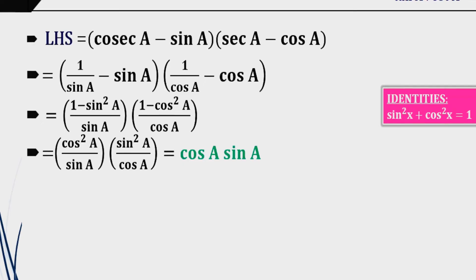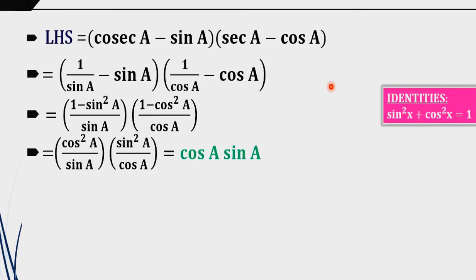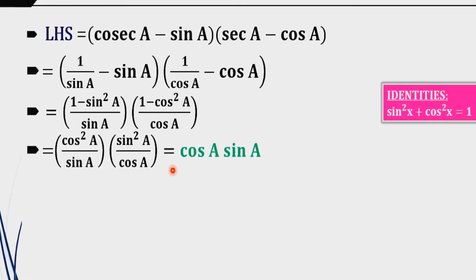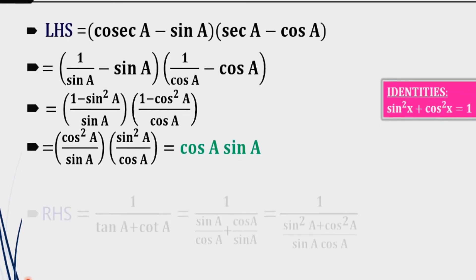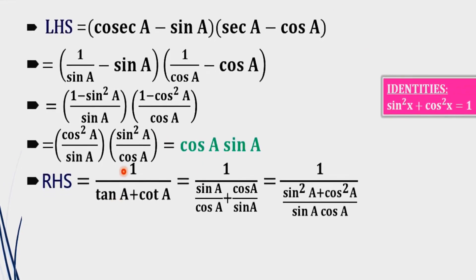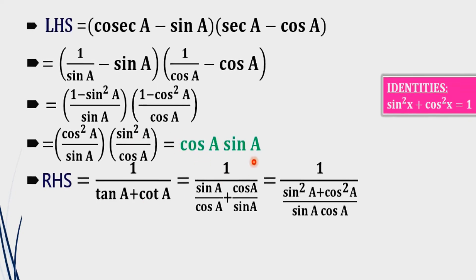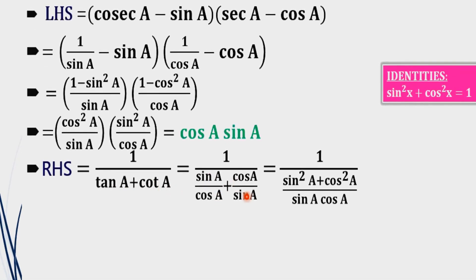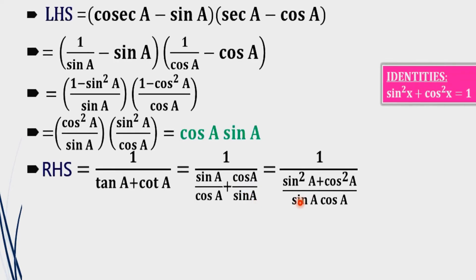Then we take the RHS and prove it is also equal to this term. The RHS is 1/(tan(a) + cot(a)). To simplify RHS, we will change tan(a) as sin(a)/cos(a) and cot(a) as cos(a)/sin(a).